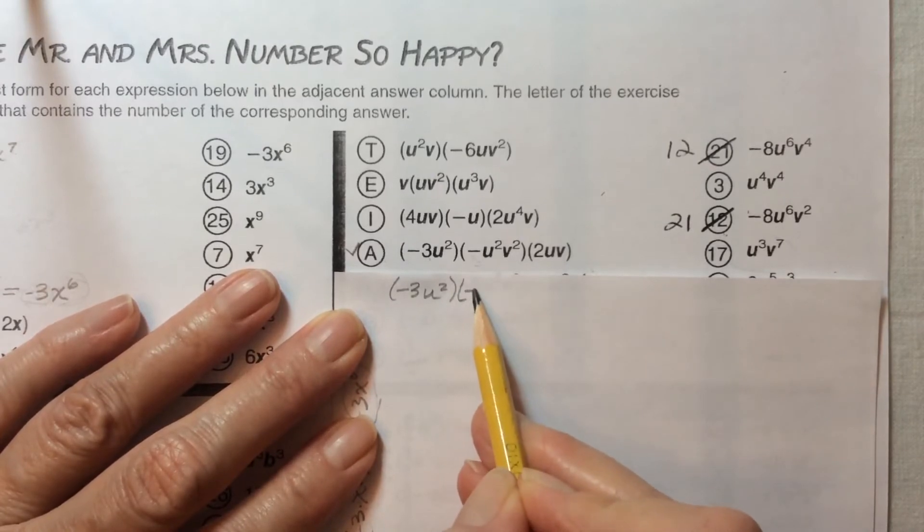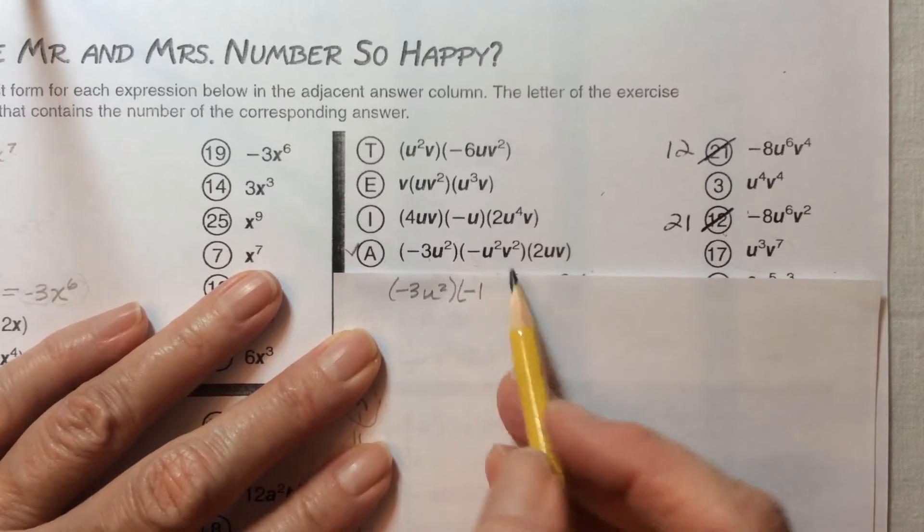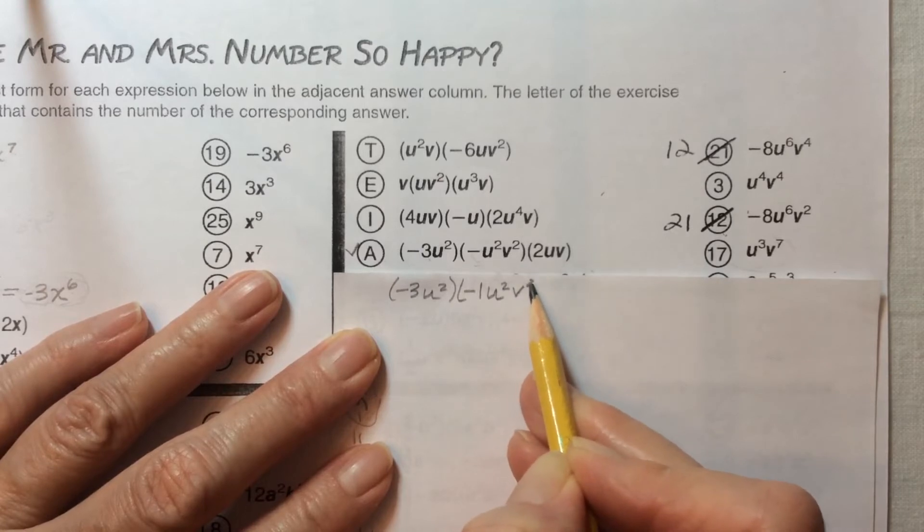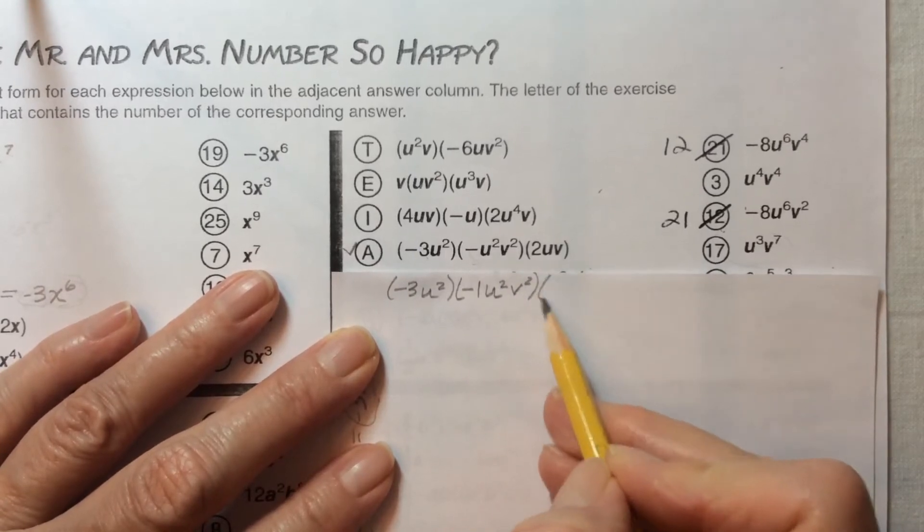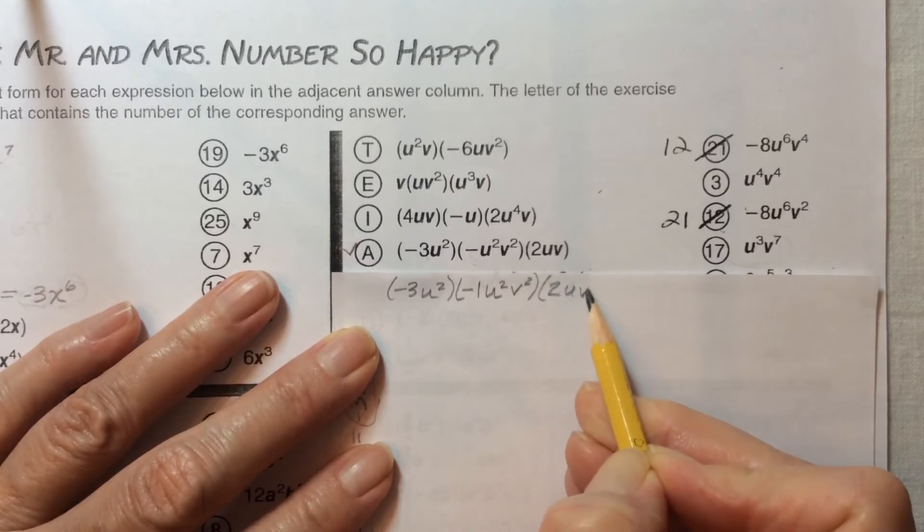Times, and we've got the negative sign, then we have our invisible one which is now visible, times u to the second power, v to the second power. And then the last term: 2 times u times v.